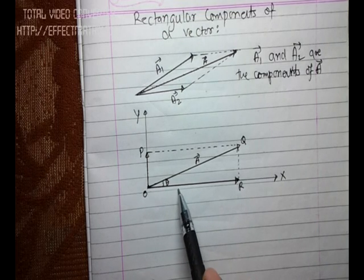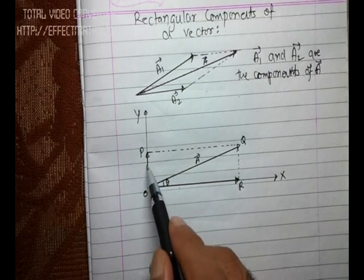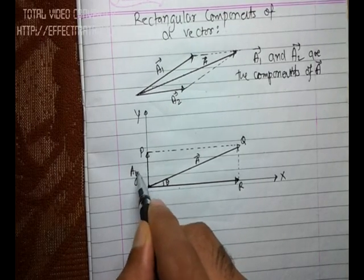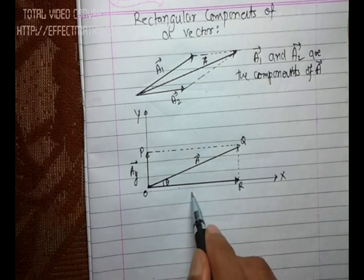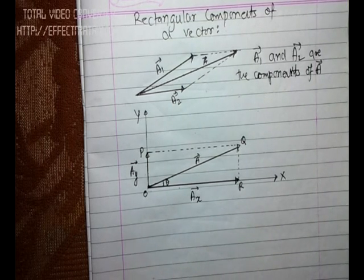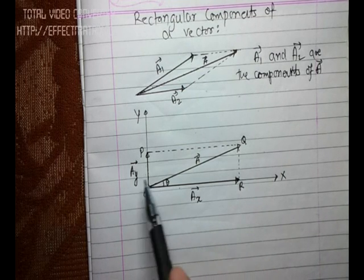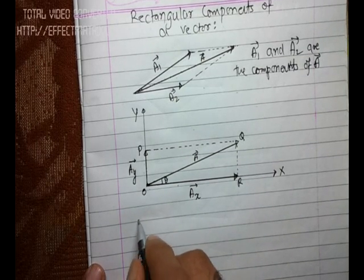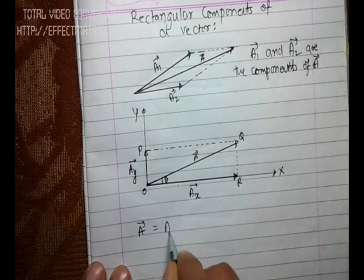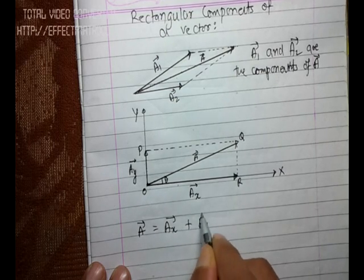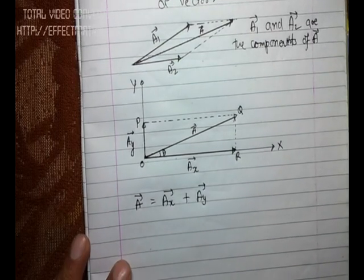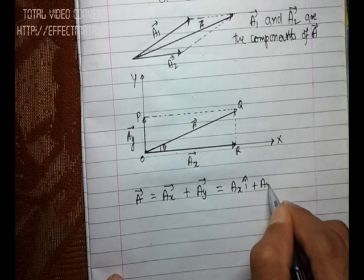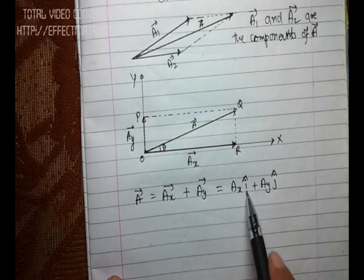So OP and OR are the components of vector a. Since the component OP is on the y-axis, it is known as a_y, and the component OR is known as a_x since it is on the x-axis. So vector a has components a_y and a_x, and I can write: vector a equals vector a_x plus vector a_y.